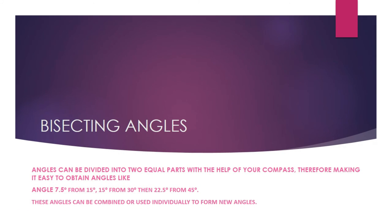Bisecting an angle: angles can be divided into two equal parts with the help of a compass, making it easy to obtain new angles. For example, if you bisect 30 degrees you get 15 degrees, and bisecting 15 degrees gives you 7.5 degrees. Similarly, bisecting 45 degrees gives 22.5 degrees. Bisection of angles is applicable to all angles irrespective of their degrees. Watch my bisecting videos to learn how to bisect angles.